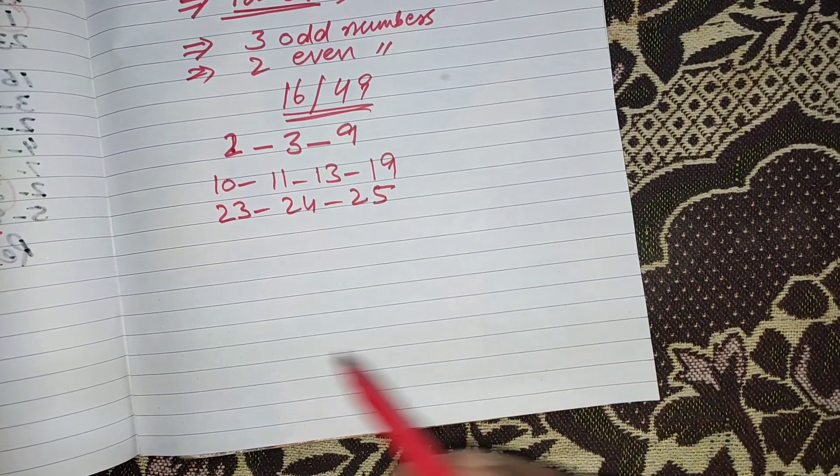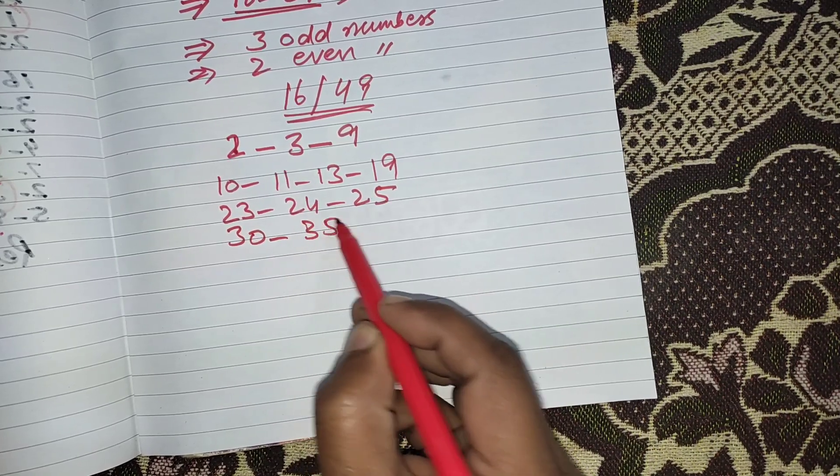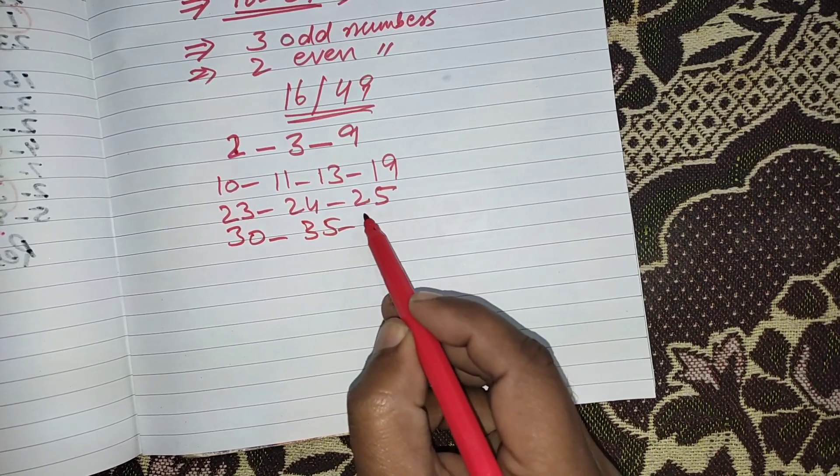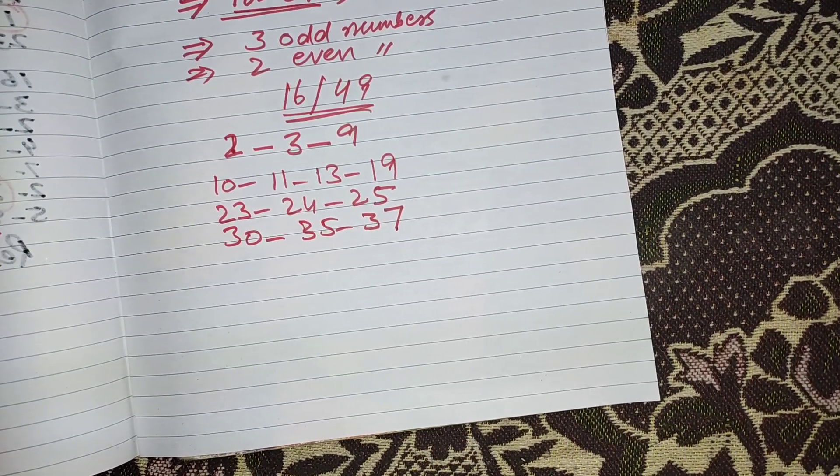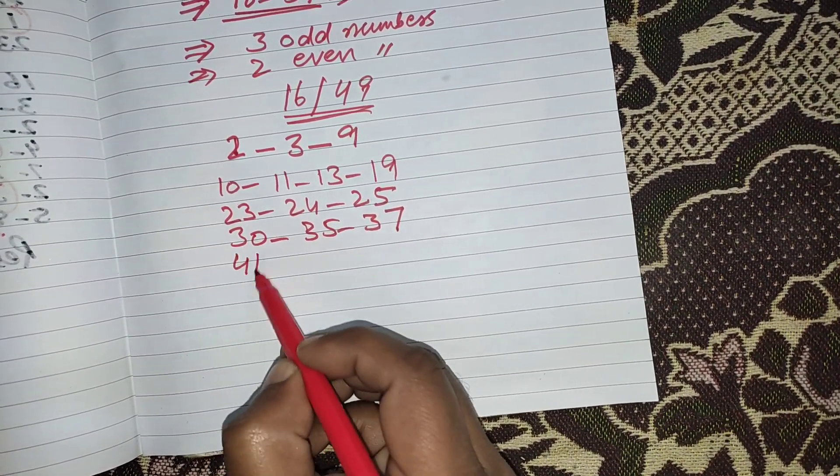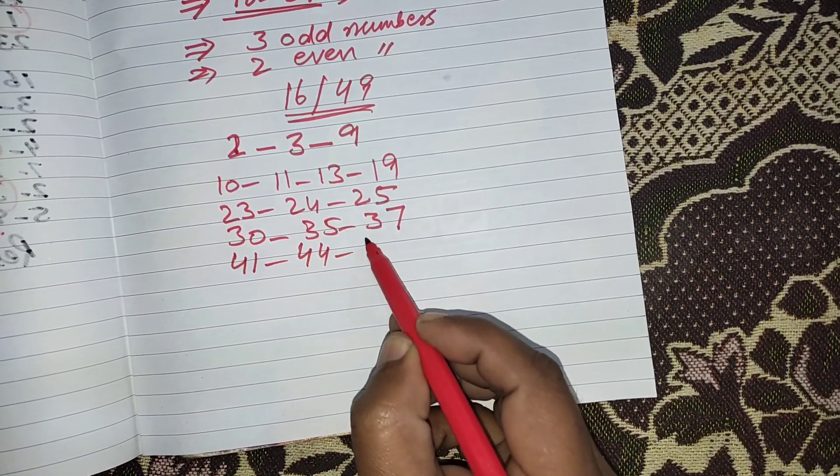From 30 to 39 I have 3 numbers: 30, 35 and 37. From 40 to 49 I have 3 numbers: 41, 44 and 49.